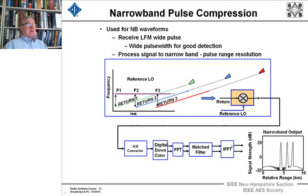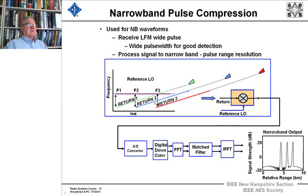This is how you'd implement narrowband pulse compression. You receive a linear FM wide pulse, and the wide pulse gives you good detection. We process this signal to narrowband pulse range resolution. We have targets coming in, subtract off the local oscillator frequency for the whole pulse width to get down to baseband, then A-to-D it, down-convert, put it through an FFT, match filter it, and inverse FFT — this is just a convolution. Here we see our three pulses, and notice we're talking about range separations on the order of kilometers between the different pulses.